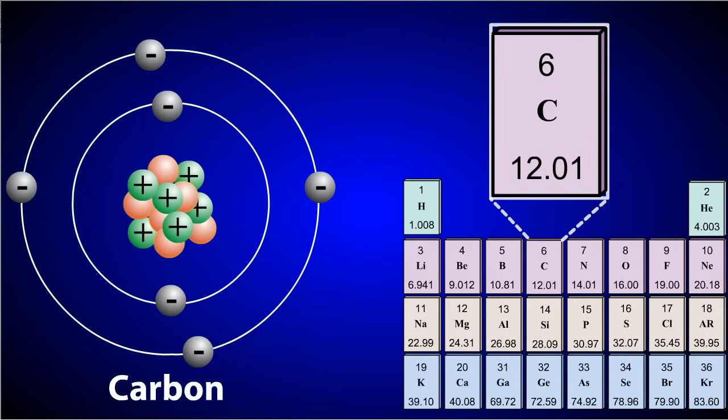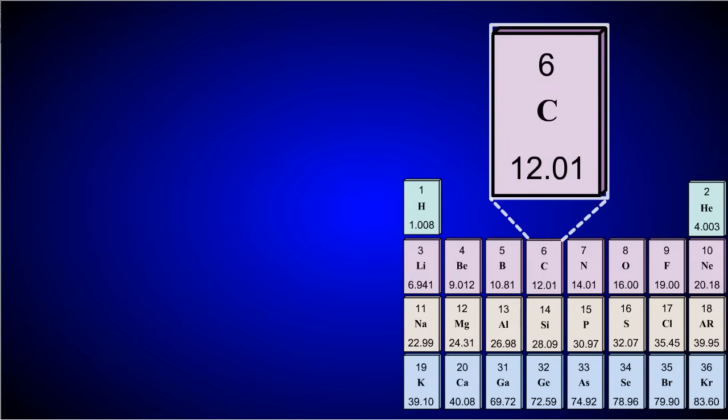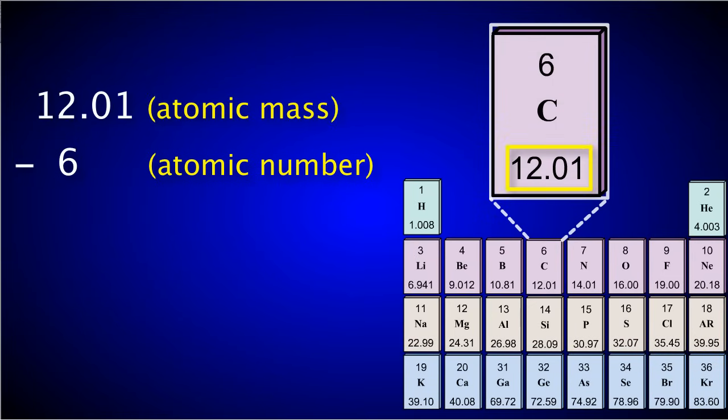If you know the atomic number and atomic mass, you can determine the number of neutrons in an element. Simply subtract the atomic number, or the number of protons, from the atomic mass, the number of protons plus neutrons, and take the closest whole number.